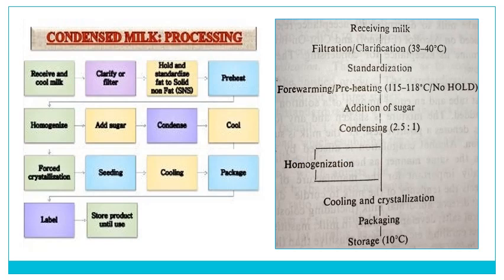The brief process flow chart for preparation of condensed milk shows: receiving milk, followed by filtration and clarification, then standardization, then preheating and pasteurization, then addition of sugar, then condensing at a ratio of 2.5:1, then homogenization, then cooling and crystallization, then packaging and storage. A block diagram on the left side presents the same information for easy understanding.